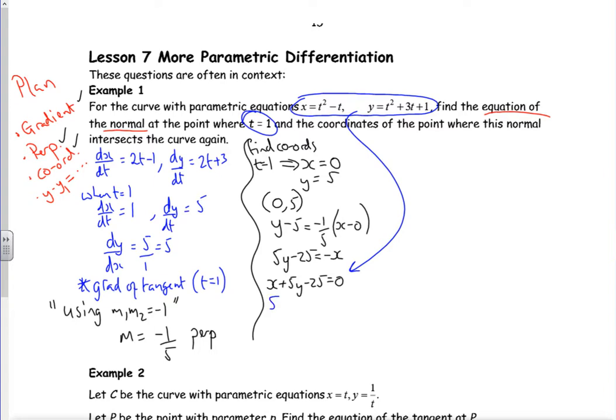It'll look messy but it should give us two t values, t is 1 and t is another number if I've done it right. So I'm going to sub in, so my x is t squared minus t plus 5 lots of t squared plus 3t plus 1. Be careful now that I don't forget anything, minus 25 is 0. Let's have a look. I've got 1t squared plus 5t squared so I've got 6t squared. I've got a minus t plus 15t, so I've got plus 14t.